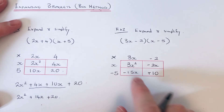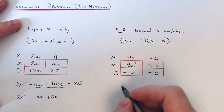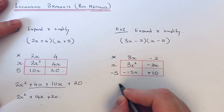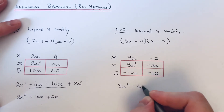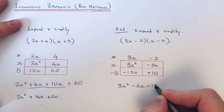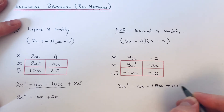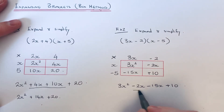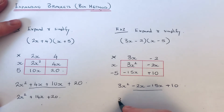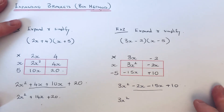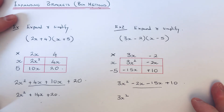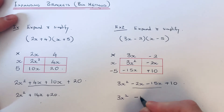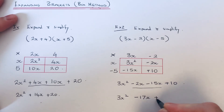Write these four terms across one line: 3x squared, minus 2x, minus 15x, plus 10. Then simplify the middle terms — on a number line, minus 2 take away 15 gives minus 17. So the final answer is 3x squared − 17x + 10.